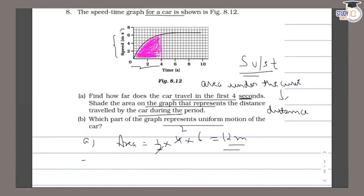In the second part, we need to identify which part of the graph represents uniform motion. Uniform motion means no change in speed. On the graph, from x = 6 to x = 10, the speed remains constant with no change, so this part of the graph represents uniform motion.